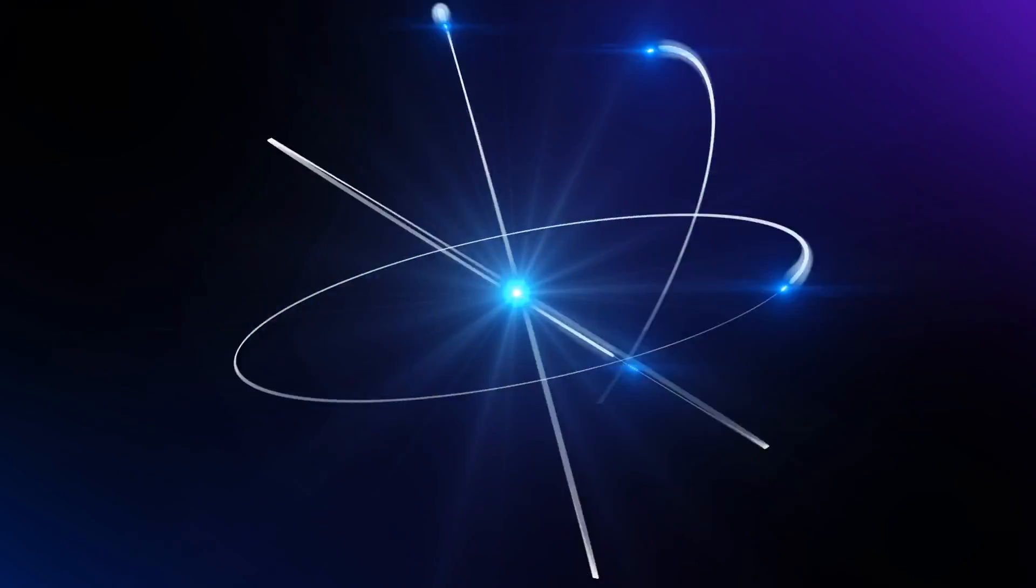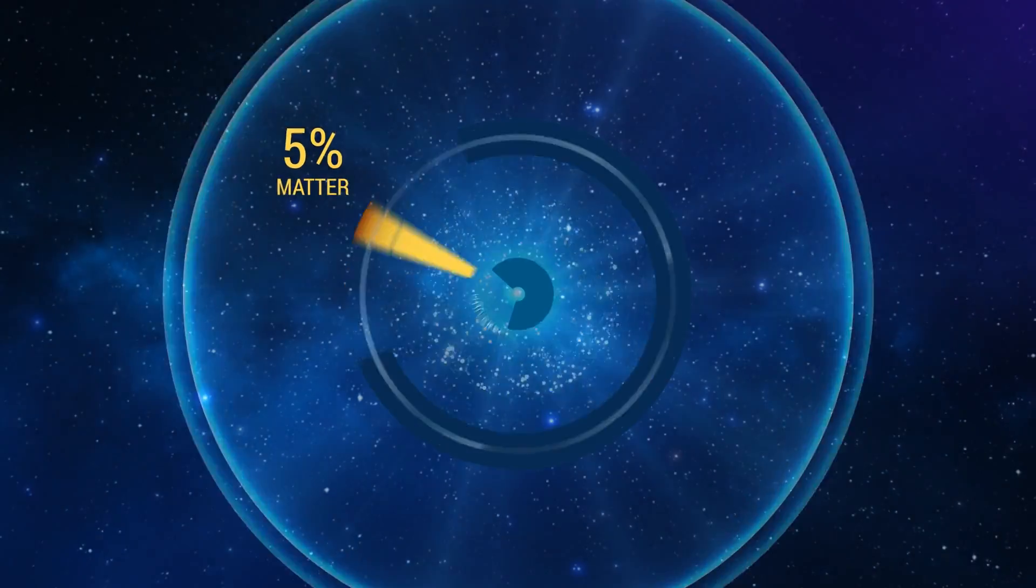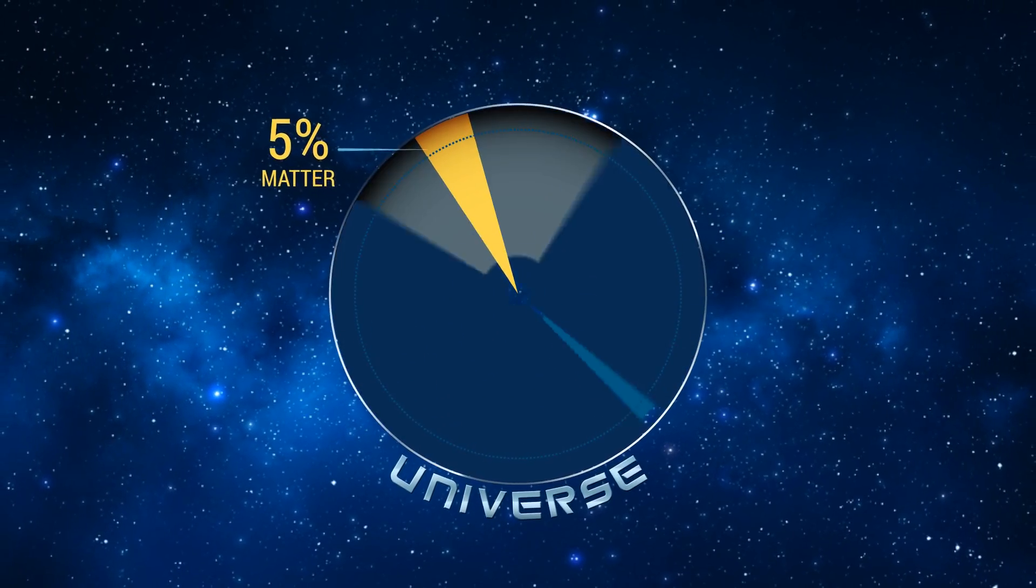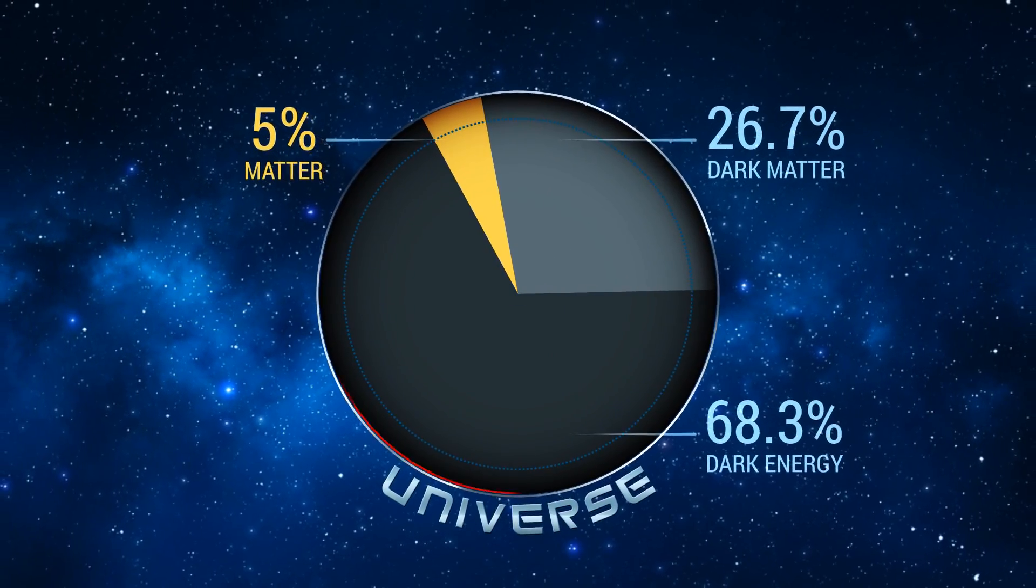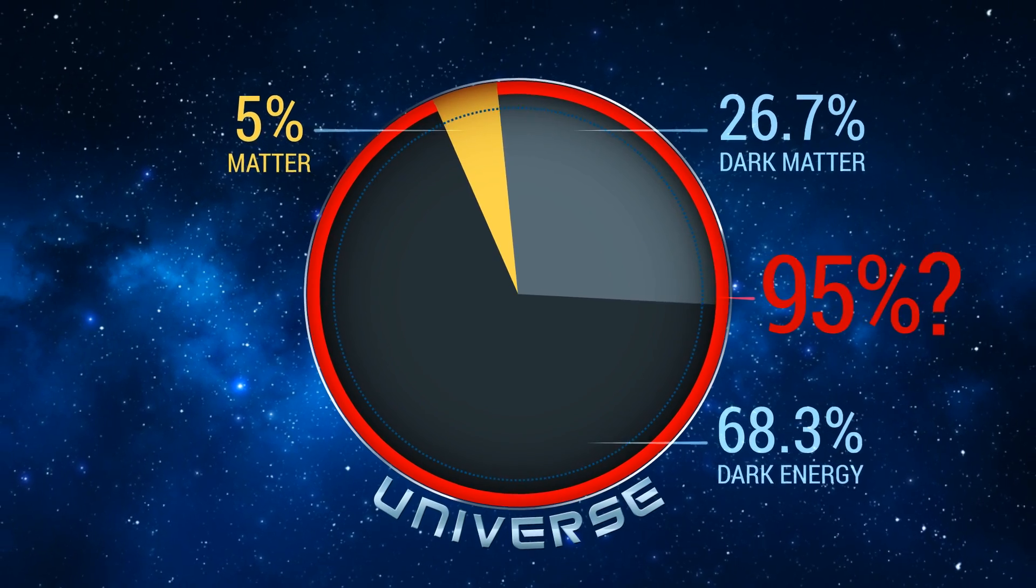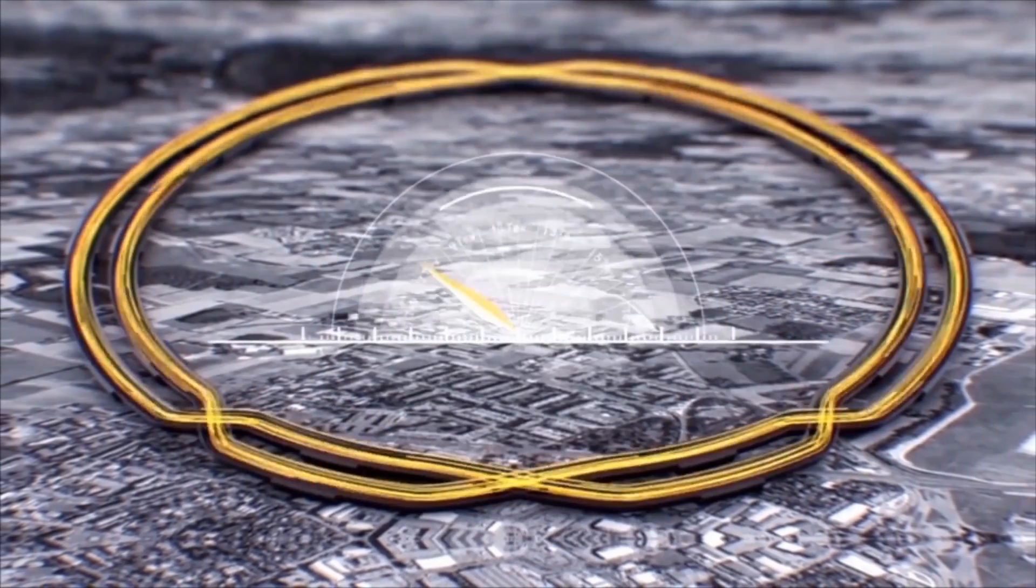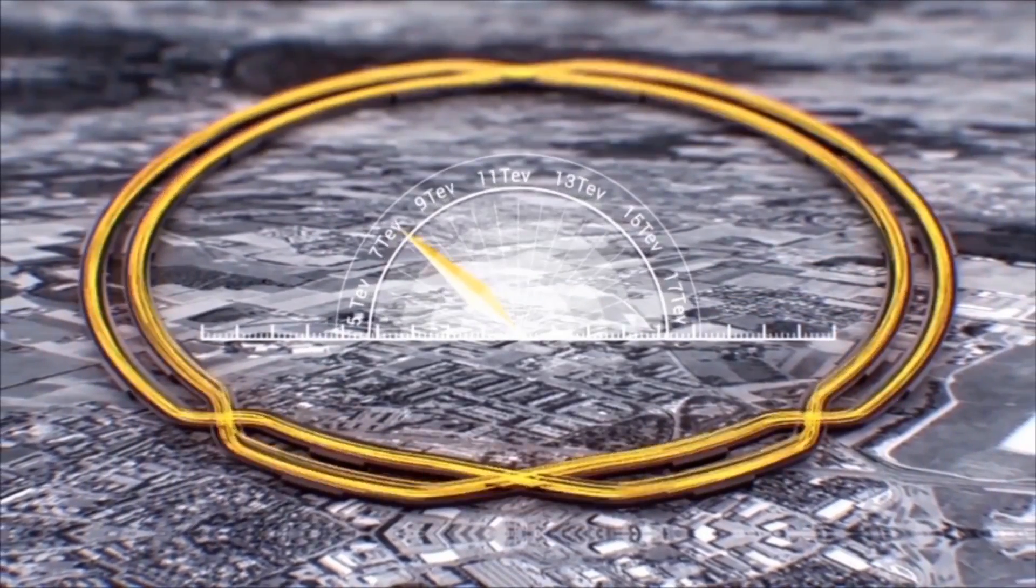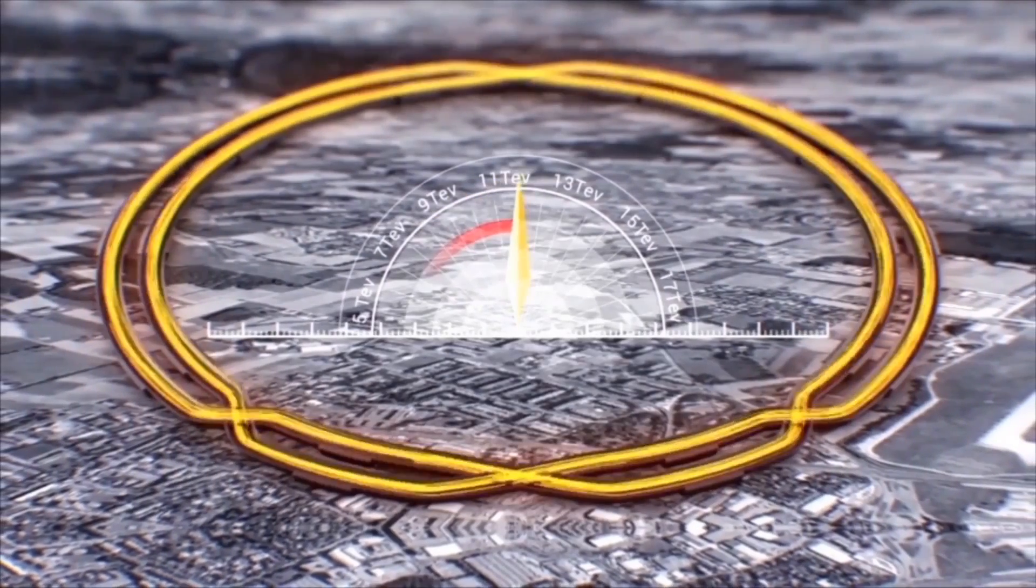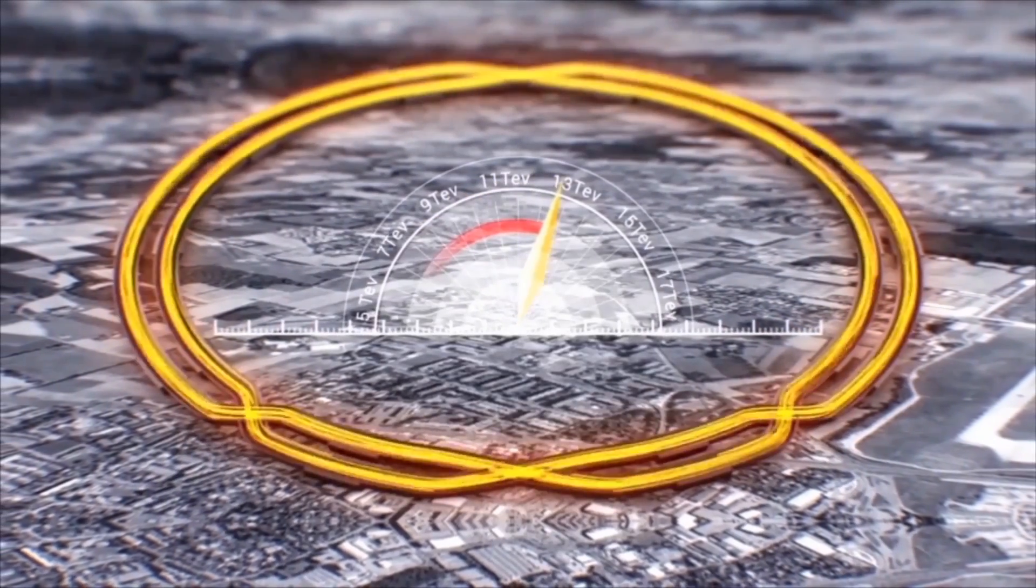The standard model only explains around 5% of the universe. Dark matter and dark energy form 95%. The collider's energy has increased to recreate temperatures last seen billionths of a second after the Big Bang.